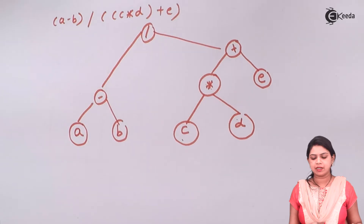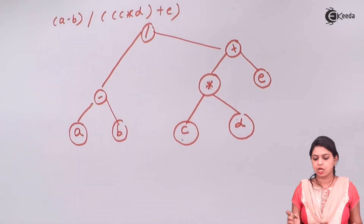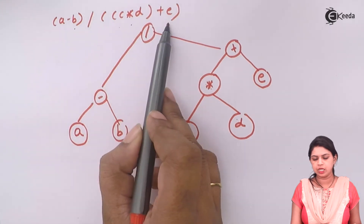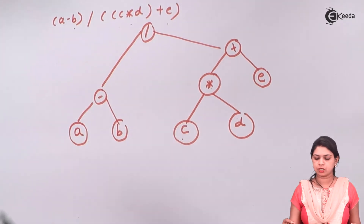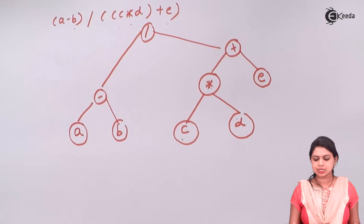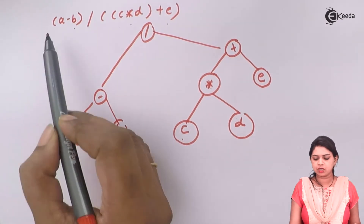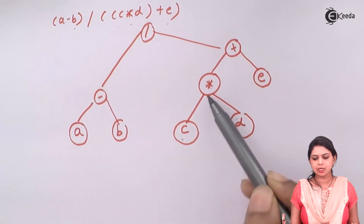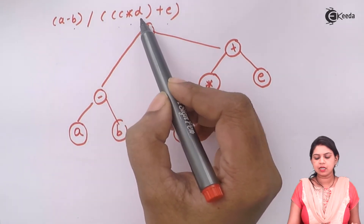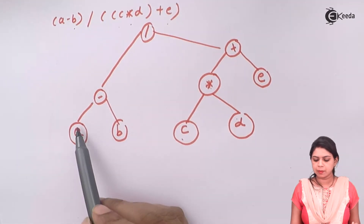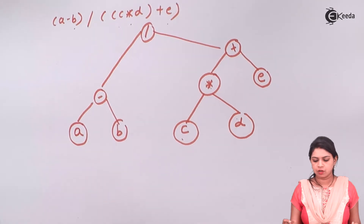Next we study how to draw a binary tree from a given expression. Suppose the expression is A minus B divided by C multiplied by D plus E. We identify the relationship between every element: A and B are joined with the minus sign, C and D are joined with the multiplication sign, and C*D is joined with E by the plus sign.